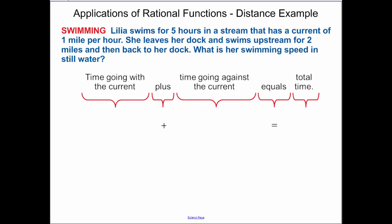Our next application is a distance example. We actually did examples like this way back in chapter 3, but this one's set up a little bit different. Lila swims for five hours in a stream that is a current of one mile per hour. She leaves her dock and swims upstream for two miles and then back to her dock. What is her swimming speed in still water?